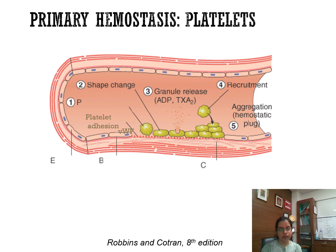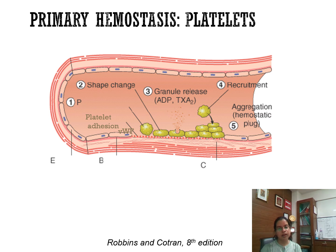Now the platelet undergoes a shape change — a conformational change. Normally platelets are discoid in shape, but when activated there will be cytoplasmic projections which provide a surface area for the coagulation cascade. The platelet gets activated and releases its granules. Platelets have alpha and delta granules. The main constituent released from the delta granule is ADP, which attracts and activates other platelets, finally leading to platelet recruitment and aggregation.